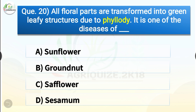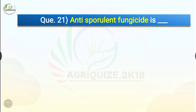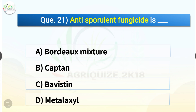Question number twenty: All floral parts are transformed into green leafy structures due to phyllody. It is one of the diseases of dash. The options are sunflower, groundnut, safflower, or sesamum. The correct answer is option D, sesamum. All floral parts are transformed into green leafy structures due to phyllody, and it is one of the diseases of sesamum.